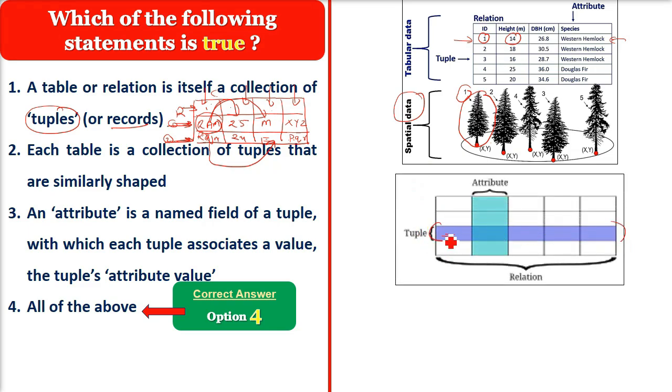تو ایک tuple کیا ہو گیا؟ ایک entity ہو گئی۔ جیسے ایک پیڑ لے لیا — اس پیڑ کے attributes ہیں جیسے اس کی height اور species. یہ attributes ہم نے یہاں لکھ دیے۔